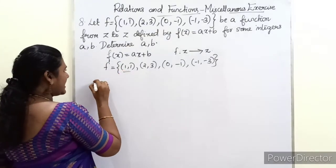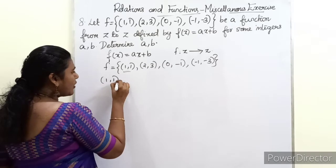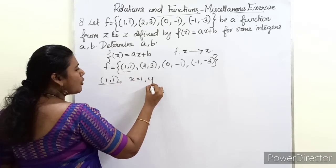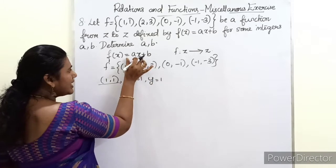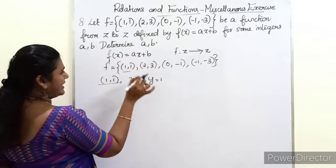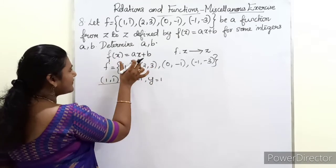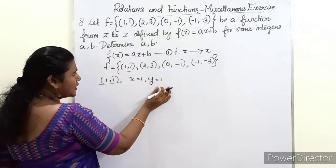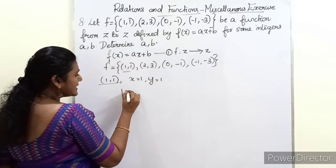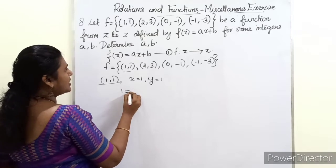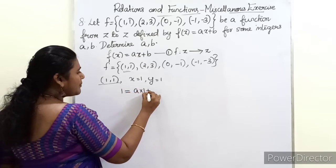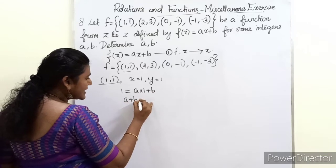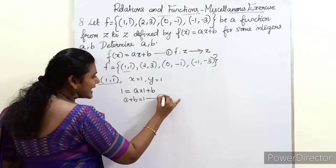Taking the first ordered pair (1, 1): x = 1 and y = f(x) = 1. Substituting into f(x) = ax + b gives 1 = a(1) + b, so a + b = 1. This is our first equation.